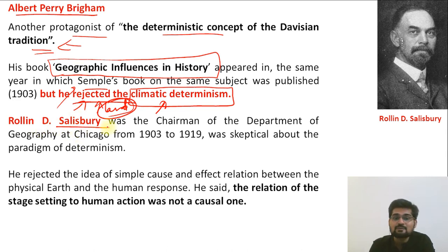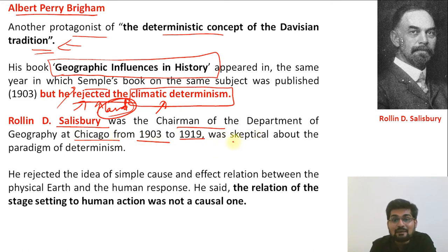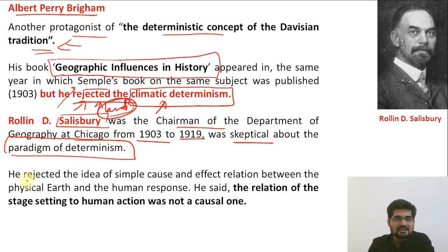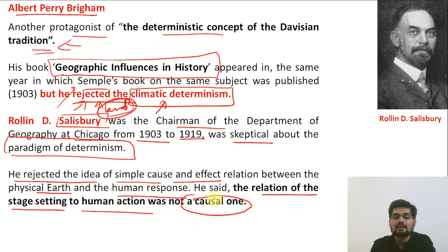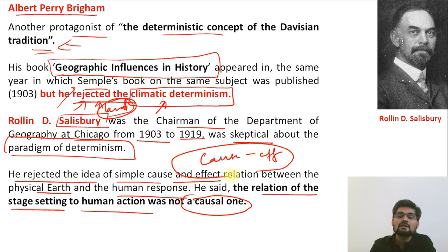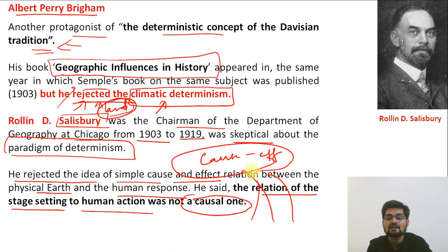Roland D. Salisbury, chairman of the department of geography at Chicago from 1903 to 1919, was skeptical about the paradigm of determinism. In his work, he rejected the idea of a simple cause-and-effect relationship between physical earth and human response, saying that the relationship of the physical setting to human action was not simply causal. Rather, multiple factors were related to the formation of a particular kind of human relationship with nature.